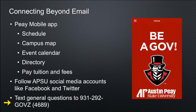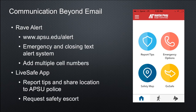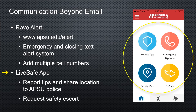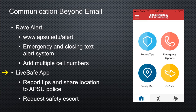You can also text general questions to 931-292-4689. Your security is very important to the university, and we have two notification systems. The first is RAVE ALERT, a text communication system that informs the university community of security issues on campus and university closings. You must sign up at apsu.edu/alert to receive the alerts. Students can list up to three mobile numbers, so this would be a great way for parents to stay informed. The second is the LiveSafe app, available for download in the app stores, which allows you to share tips and your location directly with APSU police, access important phone numbers, and request an in-person escort from APSU police.